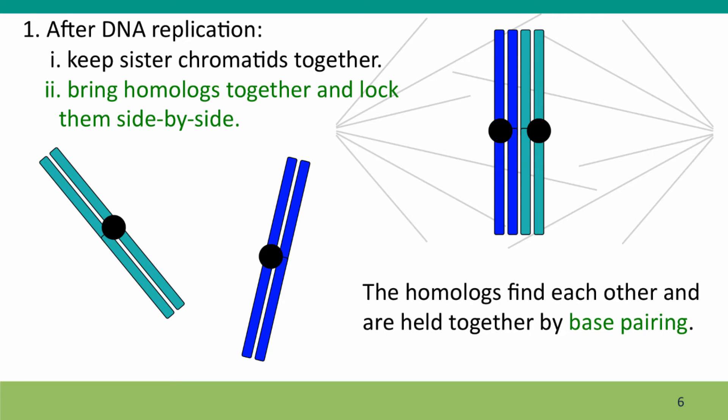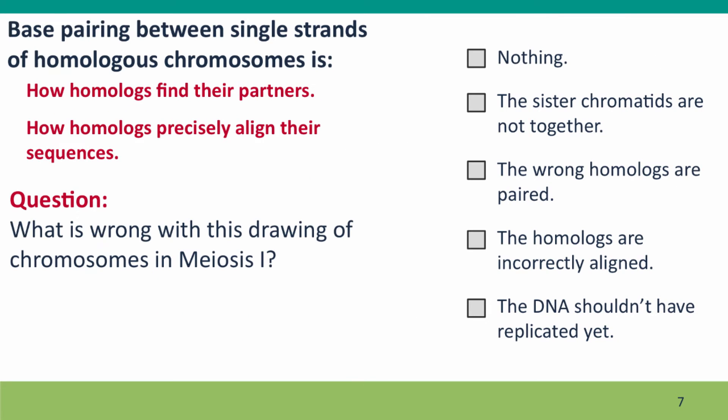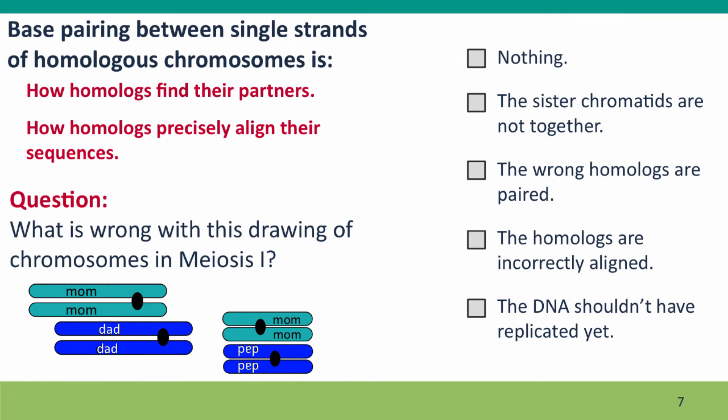How do the homologs find each other and line up correctly? The answer is that they find each other, line up correctly, and are held together by base pairing. We talked about base pairing in Modules 1 and 2 when we discussed DNA replication and mutation, but base pairing plays an essential role in meiosis. Base pairing is how the homologs find their partners and how they remain precisely aligned.